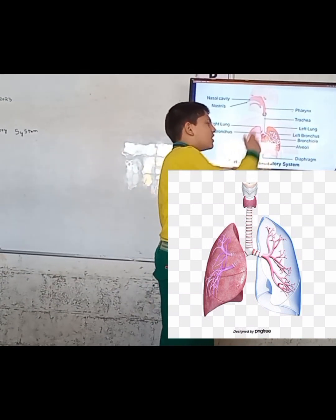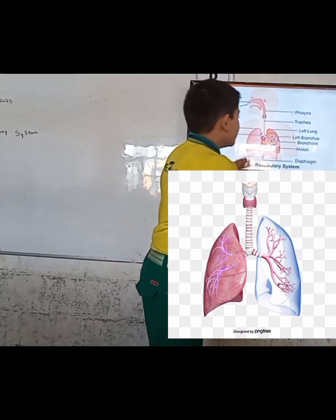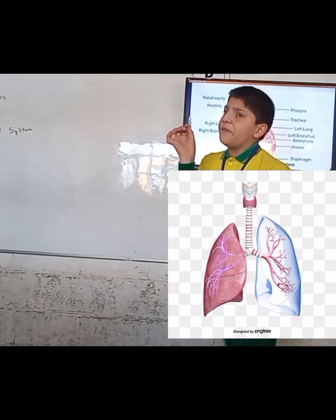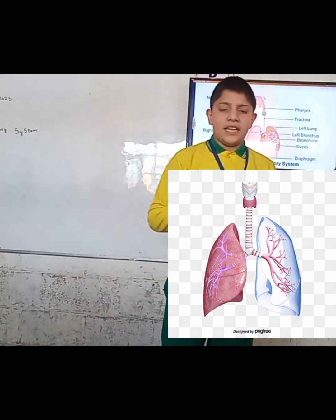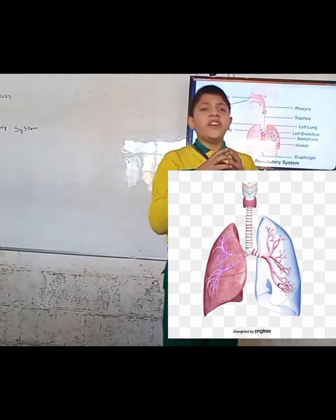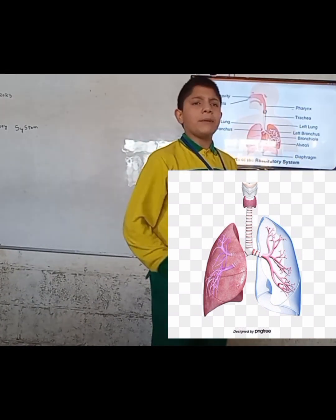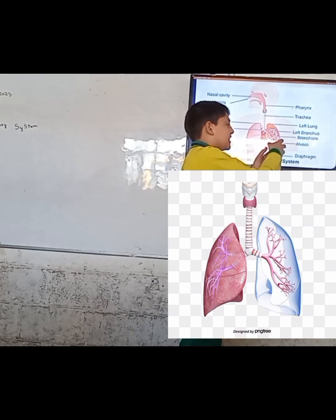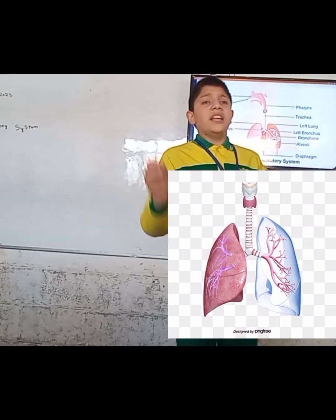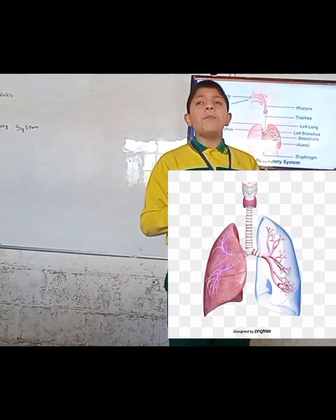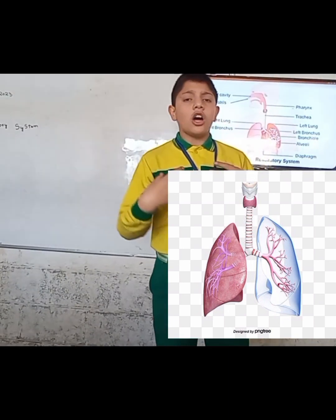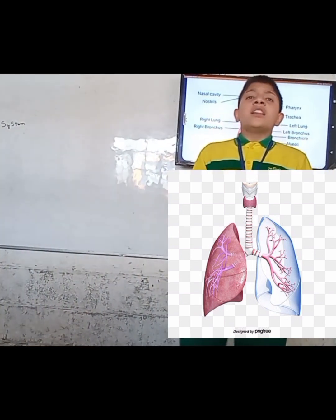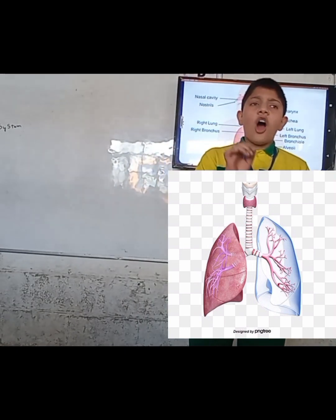Now we will learn how this oxygenation happens. When oxygen gets into the alveoli, at the surface of the alveoli there are small capillaries which attract oxygen. Our red blood cells contain iron, and this iron has a relation with oxygen — with the help of iron, oxygen gets attracted and enters into the blood.